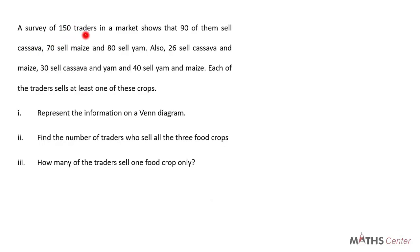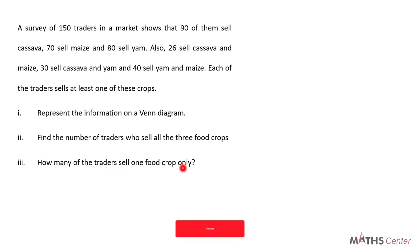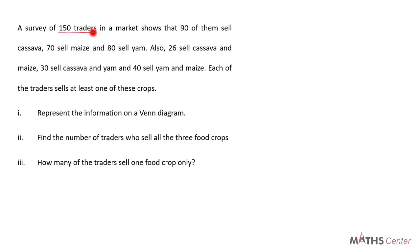A survey of 150 traders in the market shows that 90 of them sell cassava, 70 sell maize, and 80 sell yam. Also, 26 sell cassava and maize, 30 sell cassava and yam, and 40 sell yam and maize. Each of the traders sells at least one of these crops. We are asked to: (i) represent the information on a Venn diagram, (ii) find the number of traders who sell all three food crops, and (iii) find how many traders sell only one food crop. This is a three-set problem.